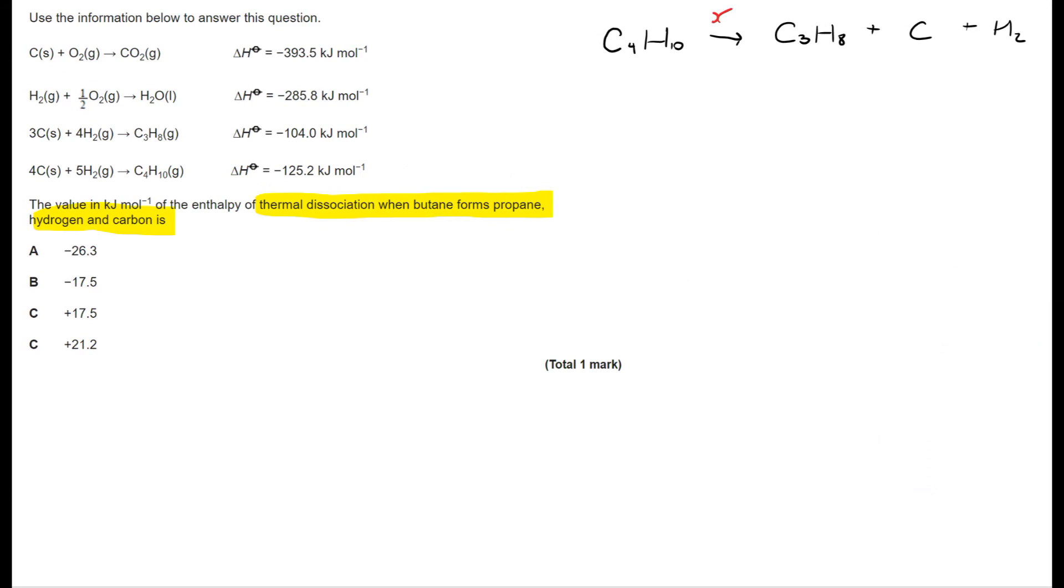From there what else have I been given? Well I've got 4C plus 5H2 gives us C4H10 and that has a value of negative 125.2. So I've put that in. I've also been given the enthalpy of formation of propane C3H8. That's negative 104. I haven't been provided with the enthalpy of formation of carbon and H2 but by definition they are both zero because you're forming them from their elements in their standard states at standard temperature and pressure. That's actually all of the data we need.